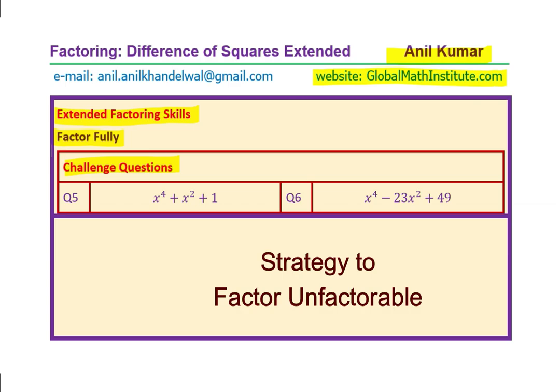The two questions are: factor fully x to the power of 4 plus x square plus 1, and x to the power of 4 minus 23 x square plus 49. You can always pause the video, answer the question and then look into my suggestions.